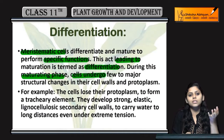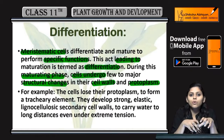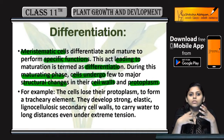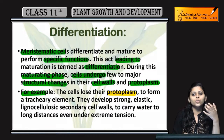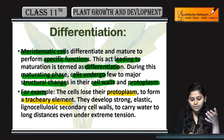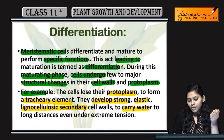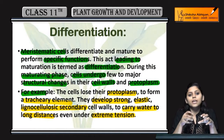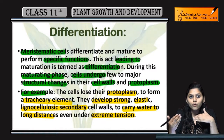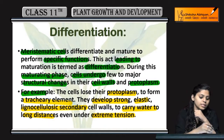During the maturing phase, cells undergo a few major structural changes in their cell walls and protoplasm. For example, cells lose their protoplasm to form tracheary elements. Tracheary elements are xylem elements — they develop strong elastic lignocellulosic secondary walls to carry water over long distances even under extreme conditions. These xylem elements conduct water and minerals.